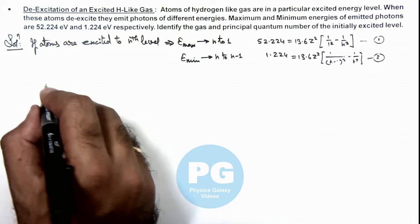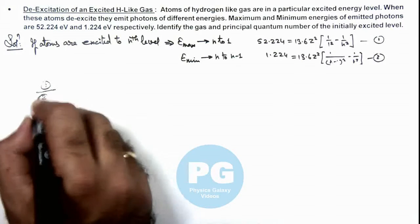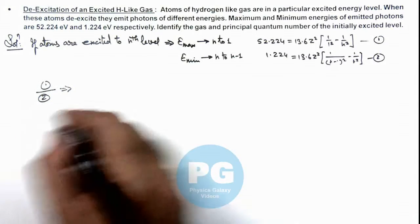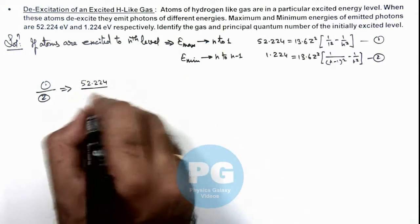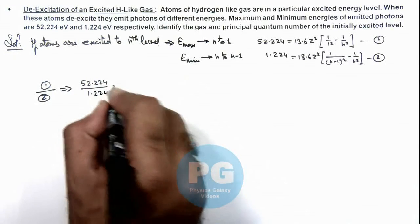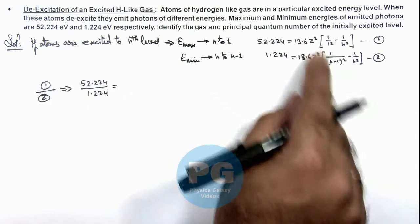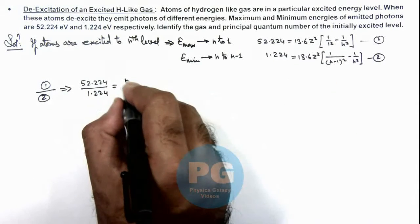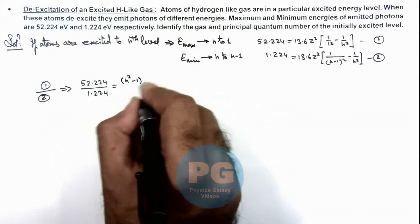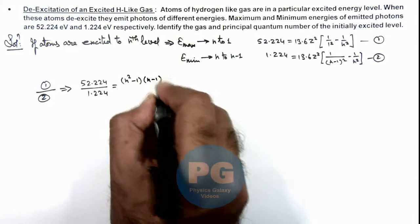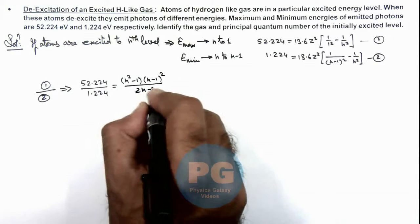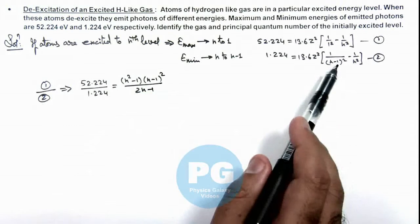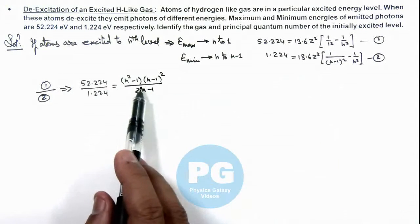Here we can simply calculate 1 divided by 2, and this will result 52.224 divided by 1.224 equals (n² - 1)(n - 1)² divided by (2n - 1). You can check and open and simplify this, you will get this value.